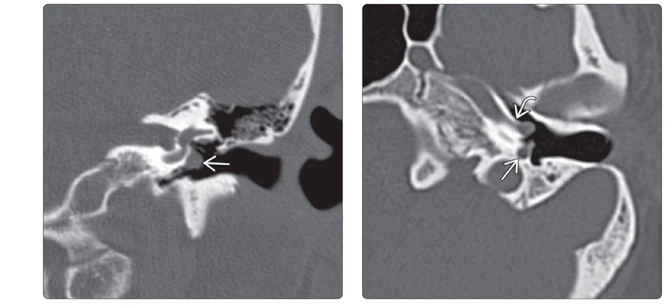The right is the axial bone CT and it reveals a smaller caliber of the aberrant internal carotid artery, which is entering the middle ear cavity through an enlarged inferior tympanic canaliculus.